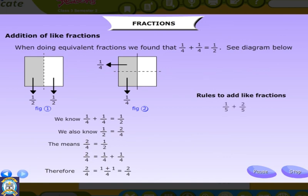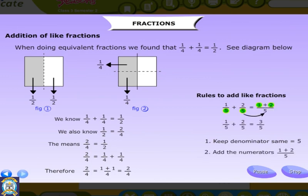Rules to add like fractions: 1/5 + 2/5 = (1 + 2)/5. Therefore, 1/5 + 2/5 = 3/5.